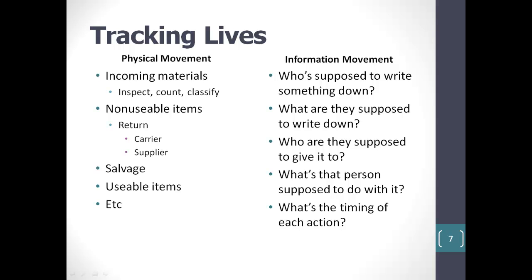An easy way to do this is: number one, draw a line vertically down a sheet of paper. Number two, down the left column, note each physical movement an item takes as it moves through your facility. Number three, down the right-hand column, for each physical movement of the item, write down the answers to these questions: Who is supposed to write something down — or key something into the database? What are they supposed to write down? Who are they supposed to provide the information to? What's that person supposed to do with it? And what's the timing of each step in the physical movement and in the information flow process?